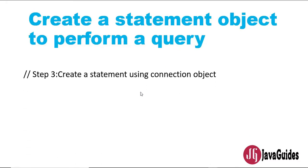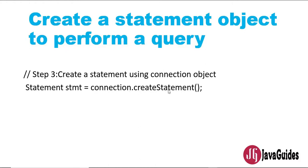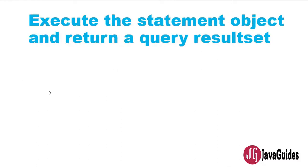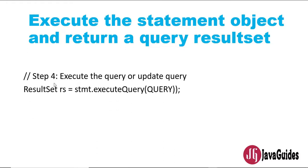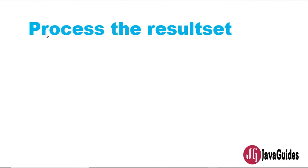The third step is creating a statement object to perform a query. We use the createStatement method — once we have a connection object, we call createStatement on it to create a SQL statement. The fourth step is executing the statement object and returning a query result. The statement object provides an executeQuery method, which executes the query and returns a ResultSet object.